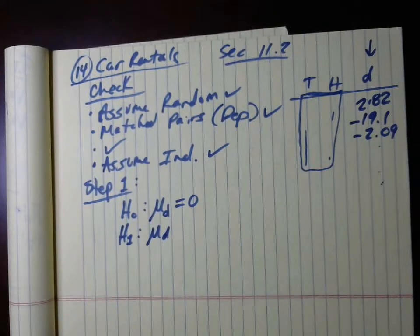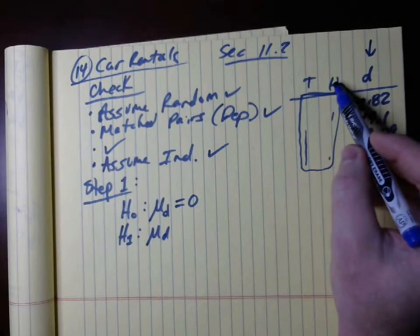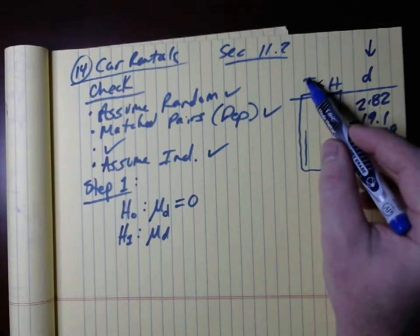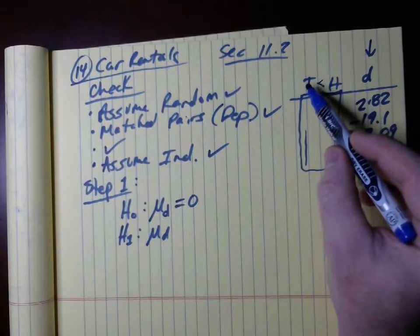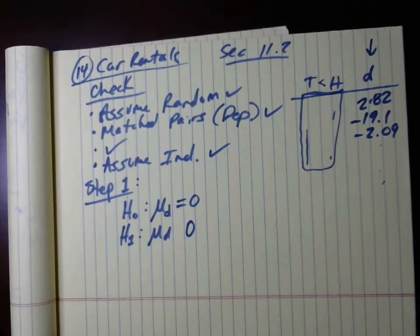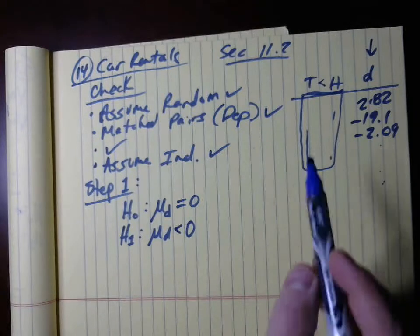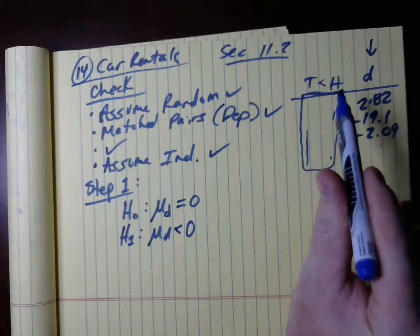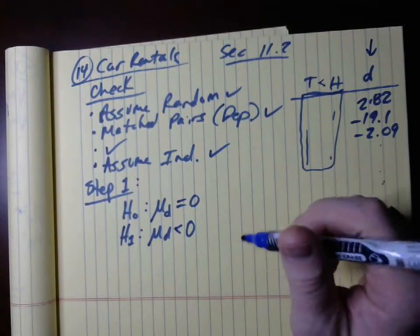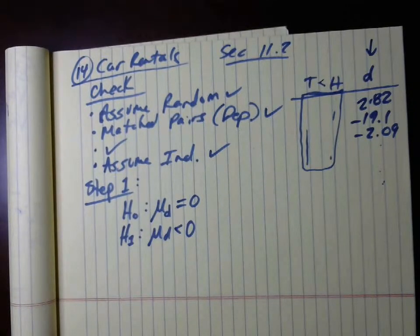We want to test whether Thrifty is less expensive than Hertz. Notice that we're doing Thrifty minus Hertz. If Thrifty is less expensive, then we're taking a smaller number and subtracting a larger number, so what we would get is a negative value. So the difference is less than zero. You take a smaller value because Thrifty is less than Hertz based on the claim — so you do less than zero. We have a left-tail test based off the wording of the claim.